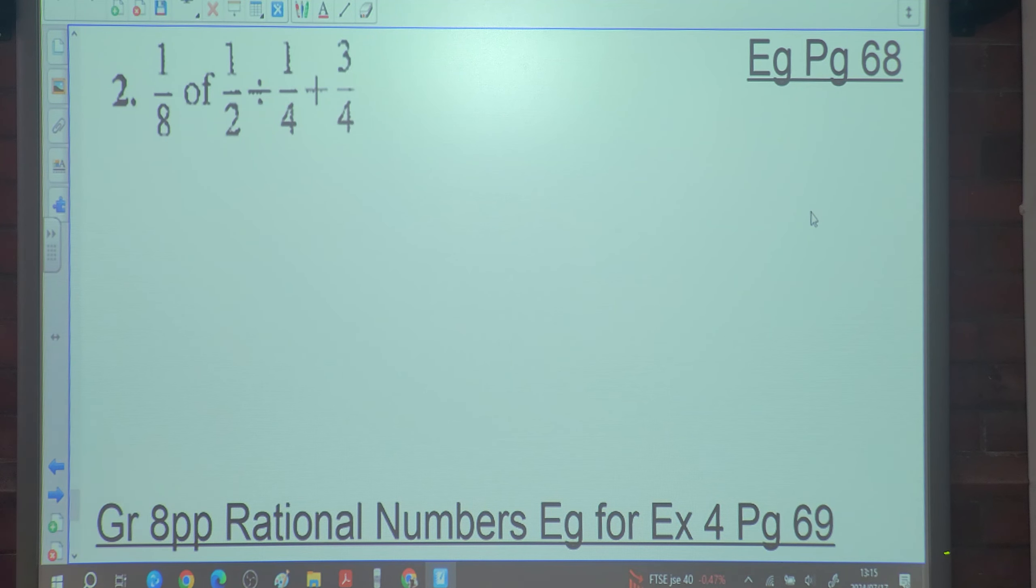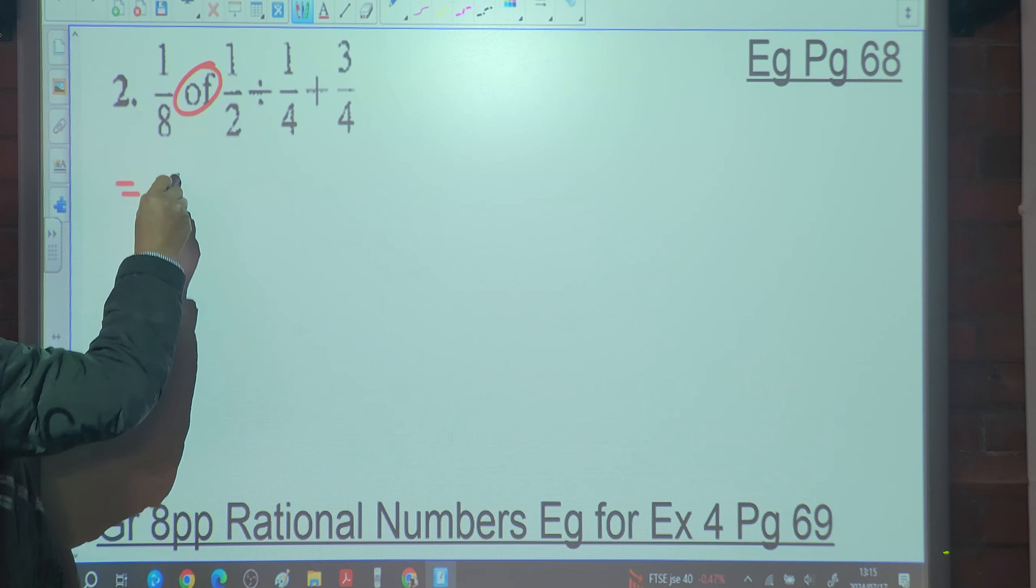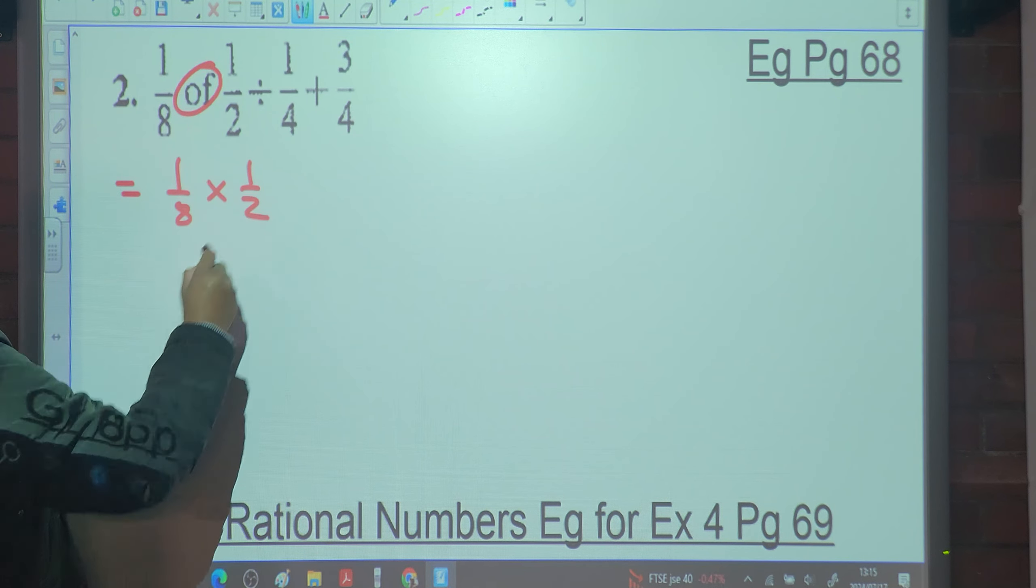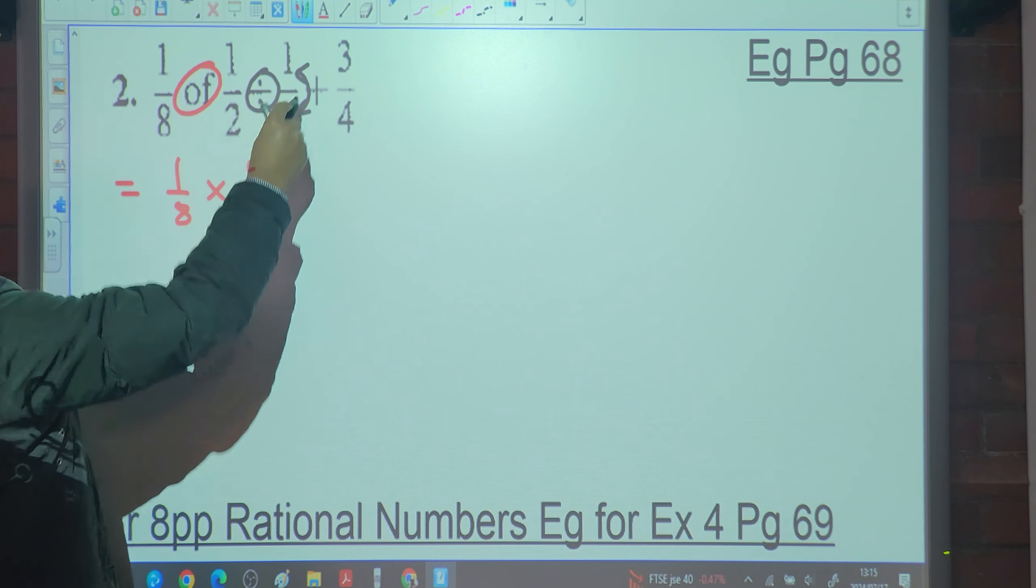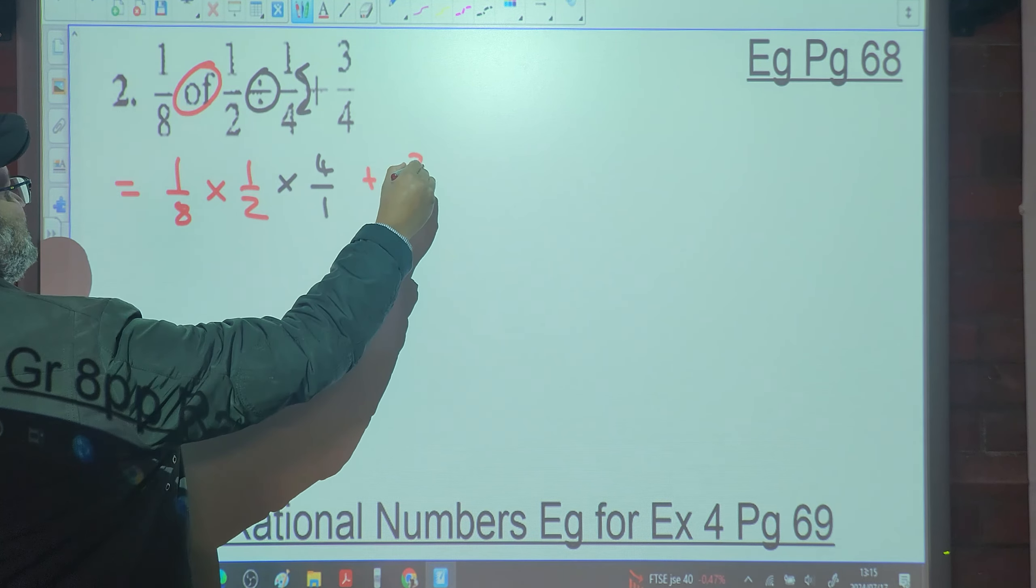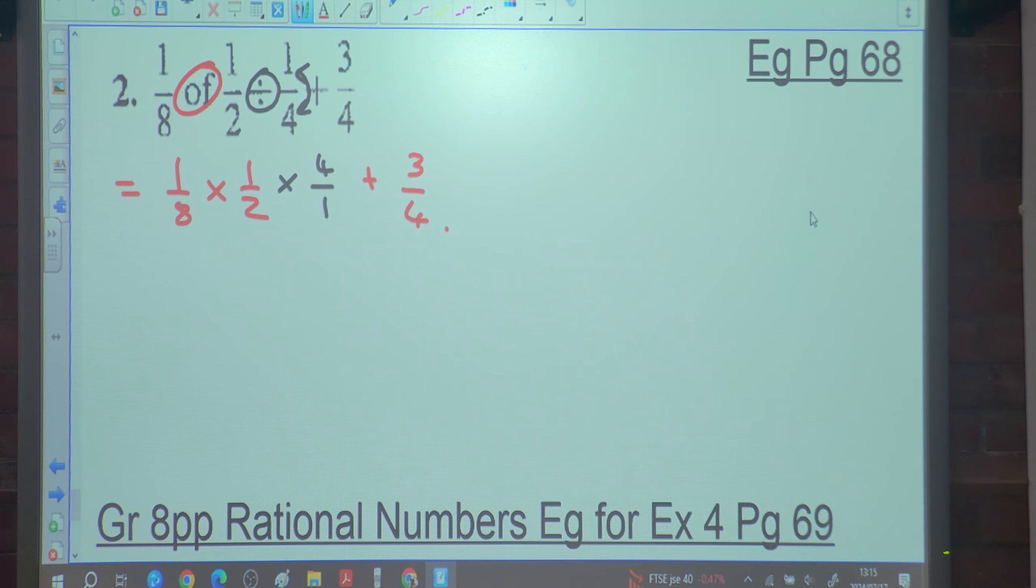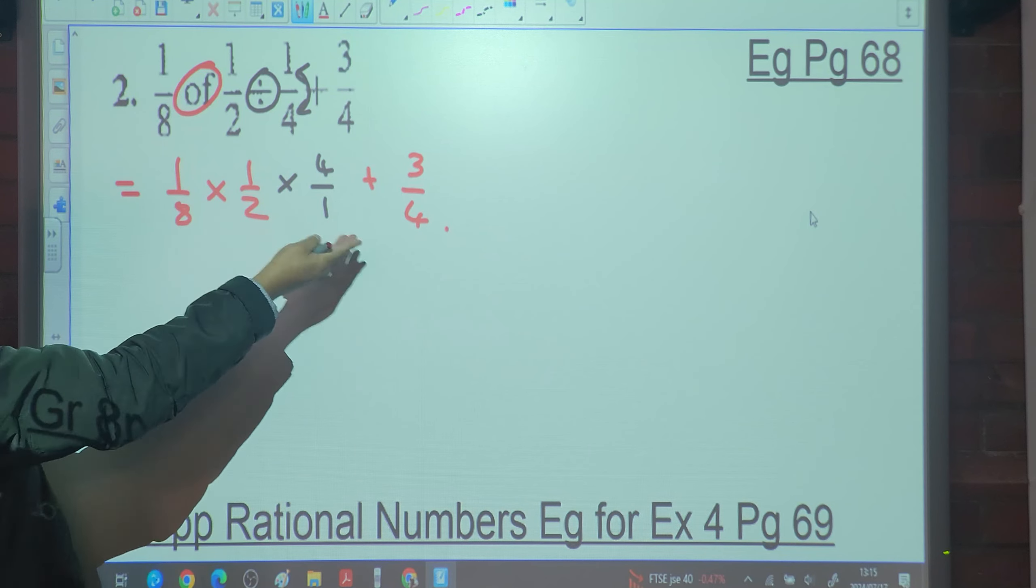Number two, an eighth of a half divided by a quarter plus three quarters. According to BODMAS, what must be done first in this case? The of. The of is going to be changed to multiplication. It's one over eight multiplied by one over two. And I can change this to multiplication, which is four over one plus three quarters.